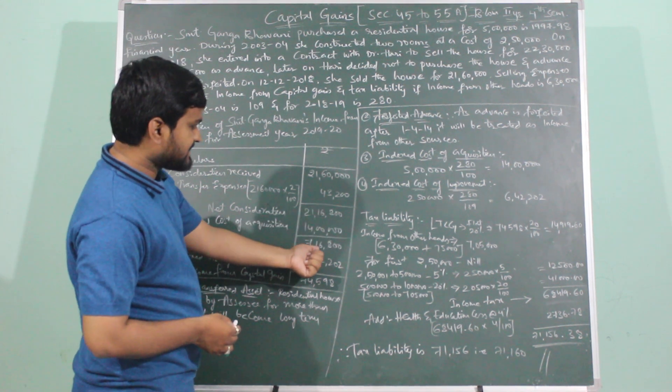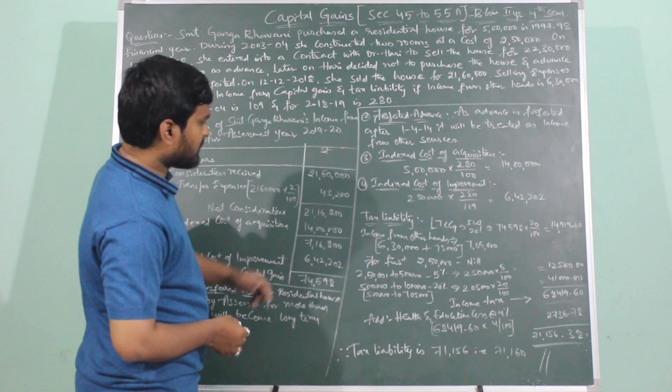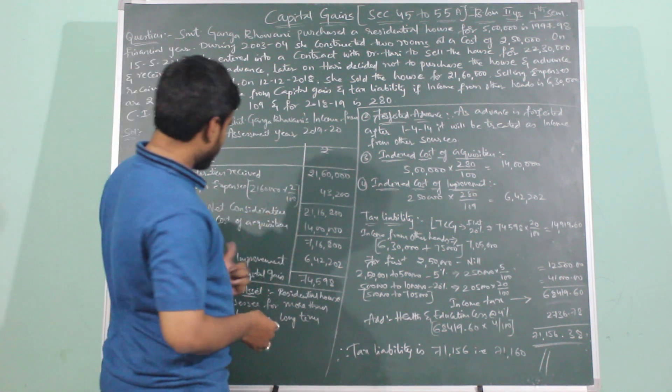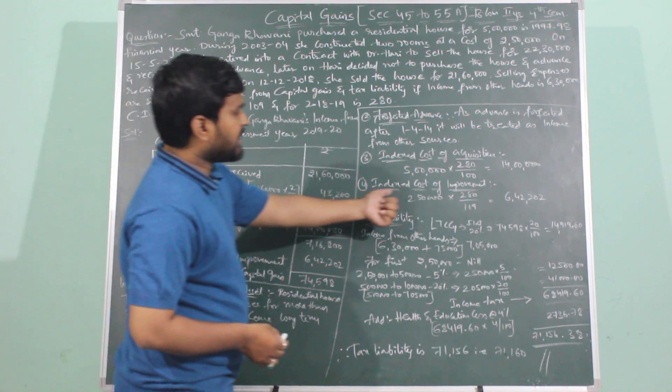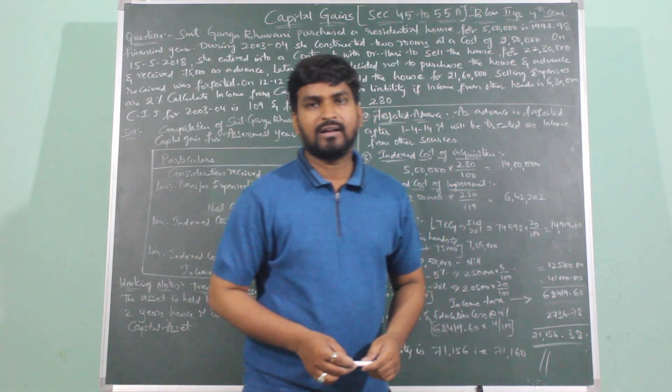So from 21,16,800 subtract the indexed cost of acquisition of 14,00,000, leaving Rs. 7,16,800. Now from this, we also subtract the indexed cost of improvement.